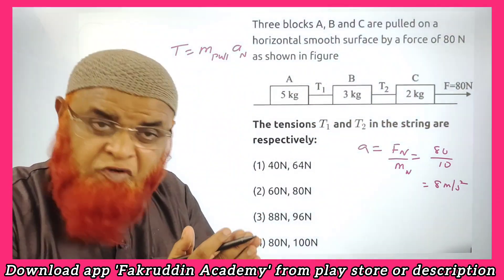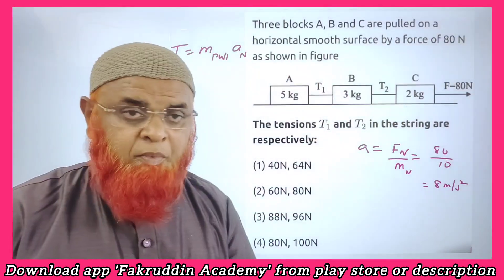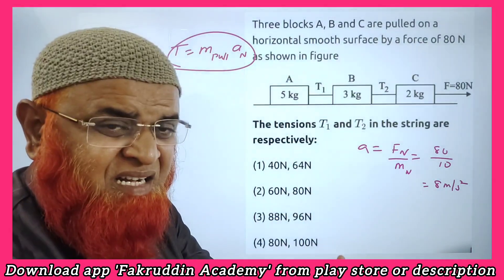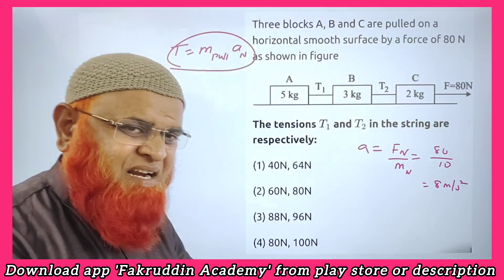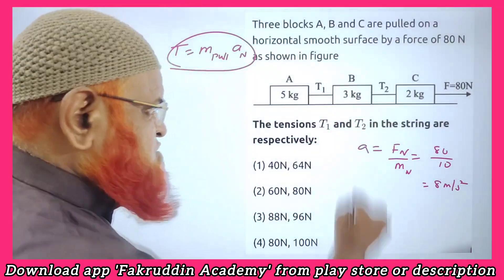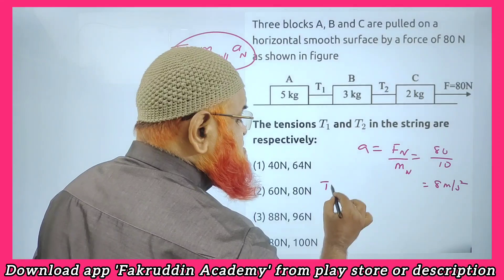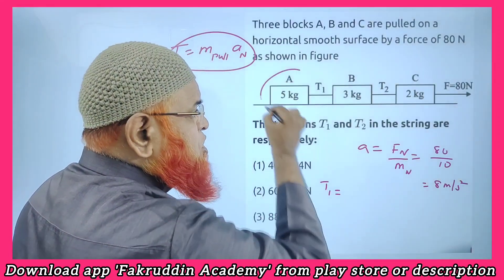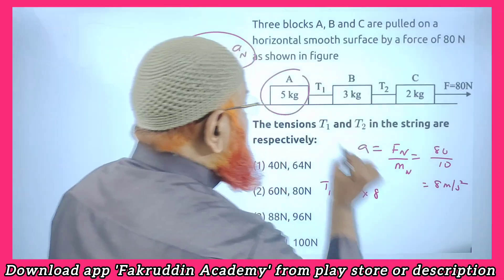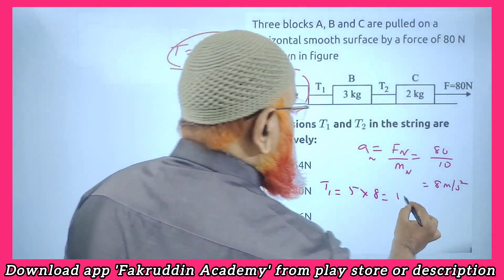What is the shortcut formula to find out the tension in this case? Tension is nothing but the masses pulled by that tension multiplied by net acceleration. If you want to find out tension T1, the masses pulled by this tension is 5 kg. So 5 into net acceleration gives 40 N.